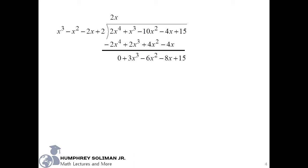We need to repeat the process again and divide 3x cubed by x cubed to get 3. And then, we will multiply all the terms outside by 3 to get 3x cubed, minus 3x squared, minus 6x, plus 6.